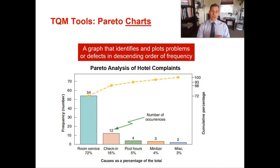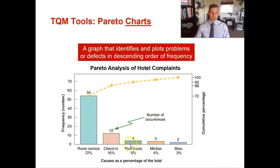In this chapter we're applying it to quality management. Using hotel complaints as an example: when you plot the data out using a Pareto analysis, you can see that you overwhelmingly have a problem with room service, followed by check-ins, pool hours, mini bar access, and miscellaneous complaints. As a hotel operations manager, you know you need to address room service first.